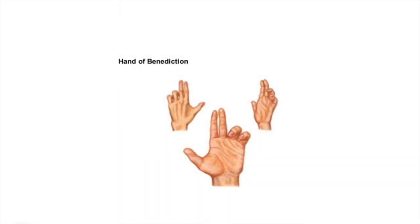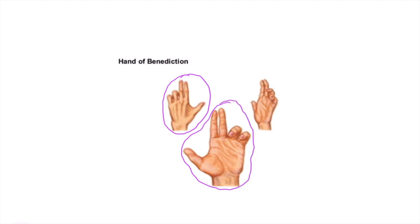Another image shows the hand of benediction with inability to flex the thumb, index, and middle finger while making a fist. The hand appears this way in dorsal view, palmar view, and lateral view seen from the ulnar side — which is why it is also called preacher's hand.